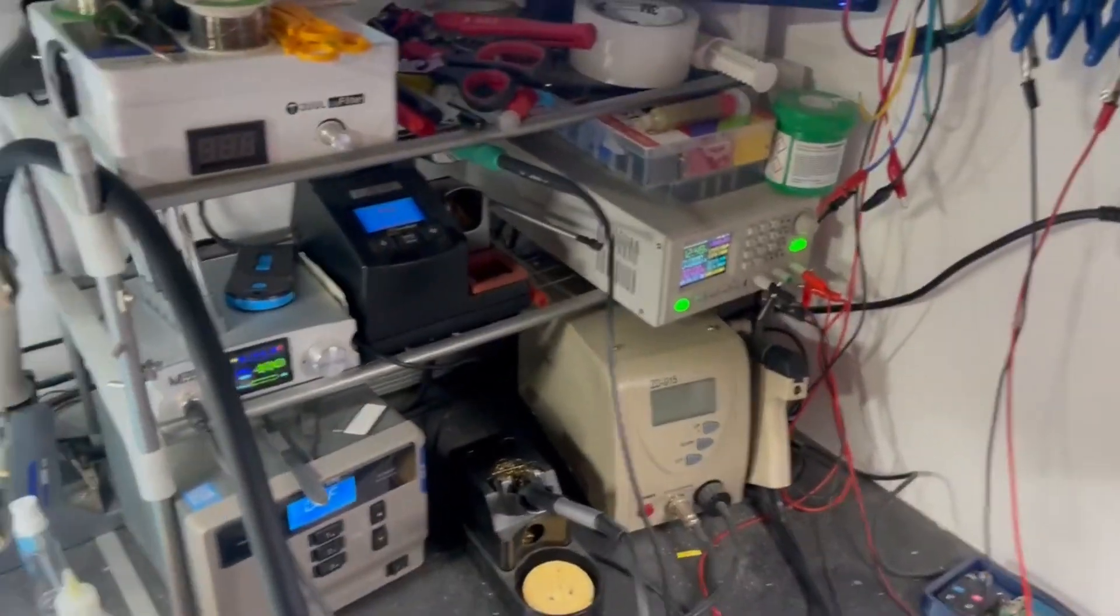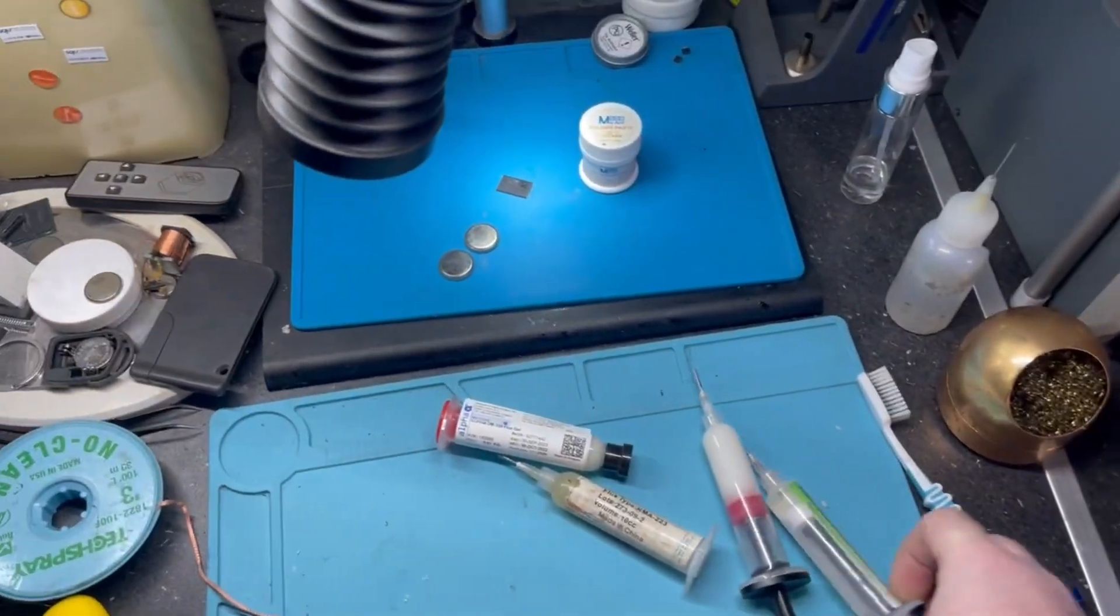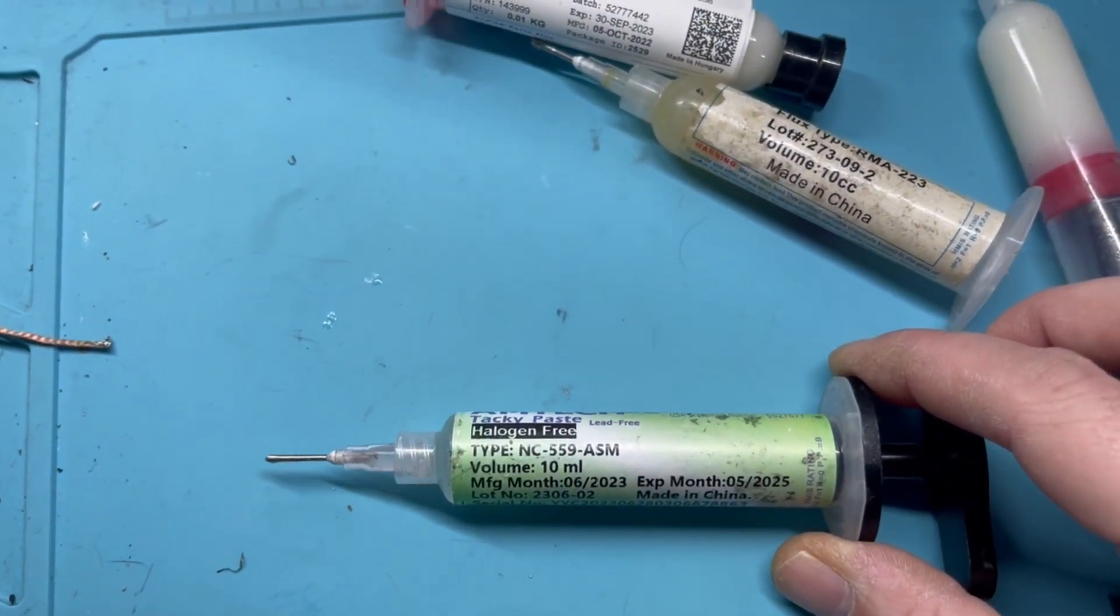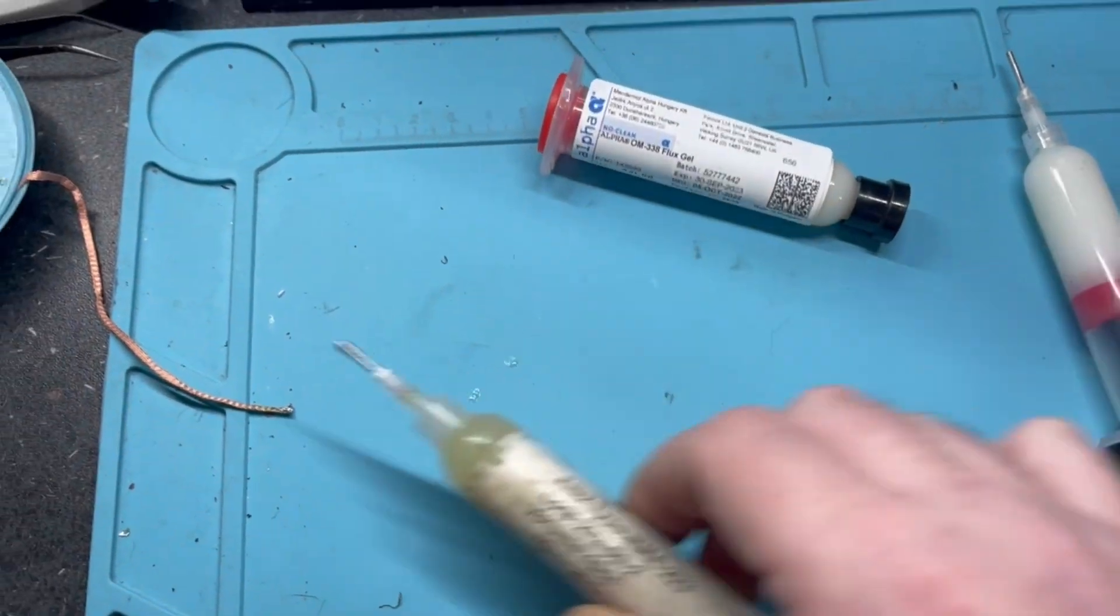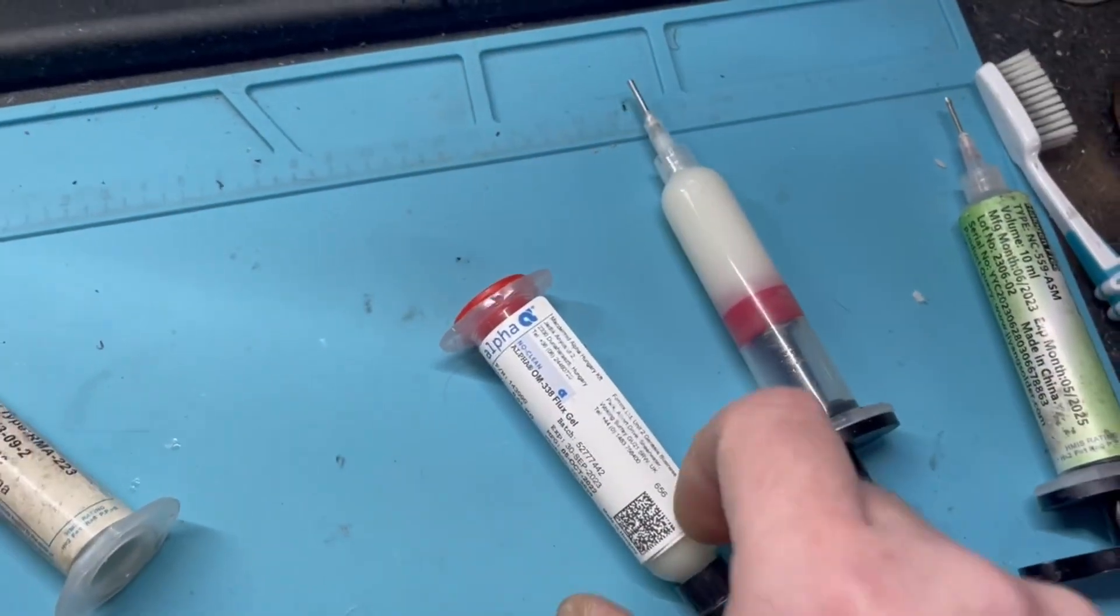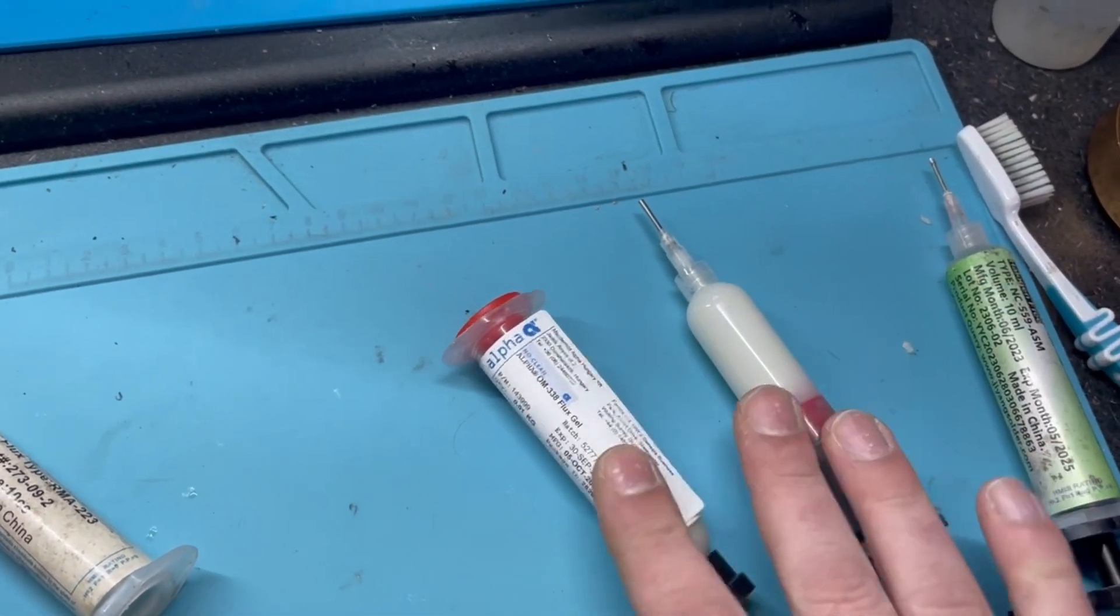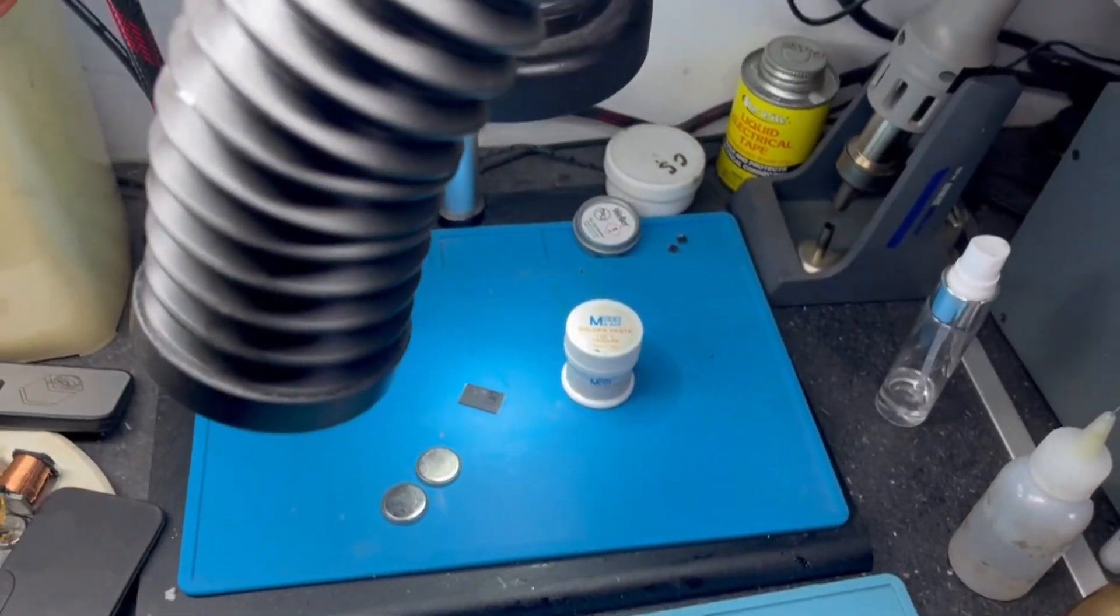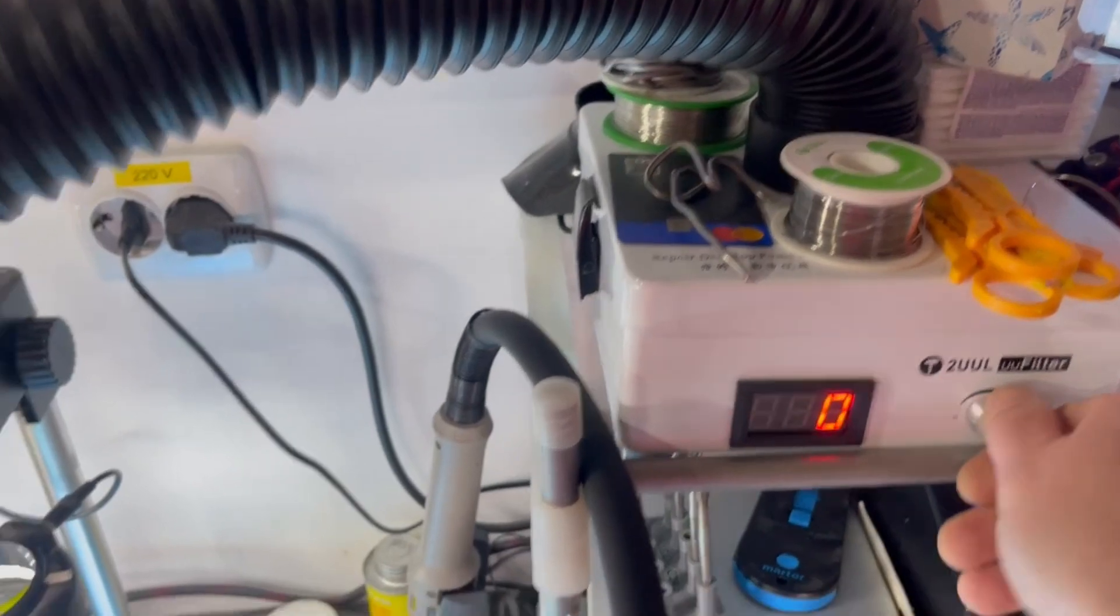Normally this is my setup. The flux I'm using most of the time is this Amtec NC 559. The second flux I use is the alpha flux. This generates a lot of smoke, and for that I have this fume extractor.